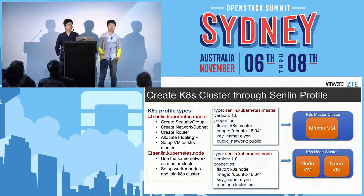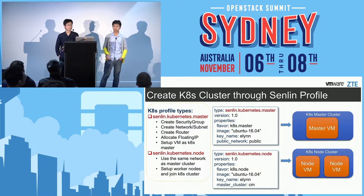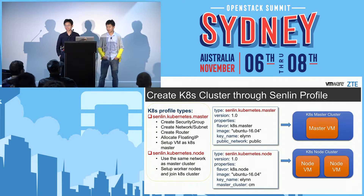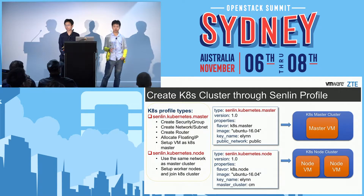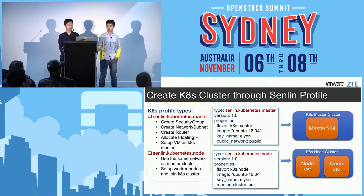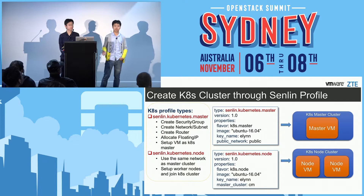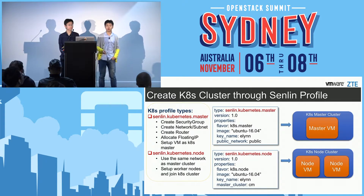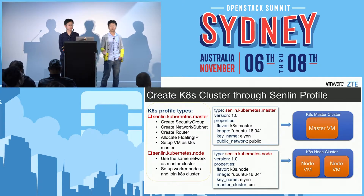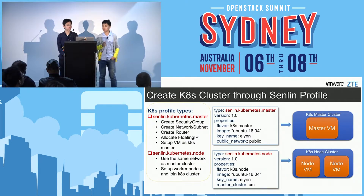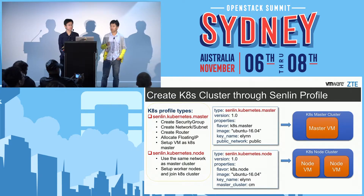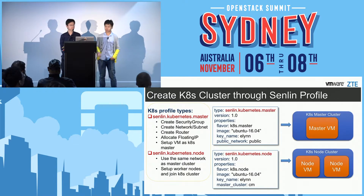Now I will give more details of how we use Senlin to manage and operate the Kubernetes cluster. Senlin is a resource pool management tool that can create a cluster and manage it with its capabilities. In order to use Senlin to manage Kubernetes, the first step is to stand up Kubernetes. I created two new profiles in Senlin for this. One is for the Kubernetes master and one is for the Kubernetes node. I use the Kubernetes master profile to create a master cluster, and I need to input the flavor and the image name — here I use Ubuntu 16.04 — and also the SSH key and the public network. Then Senlin will do the rest.